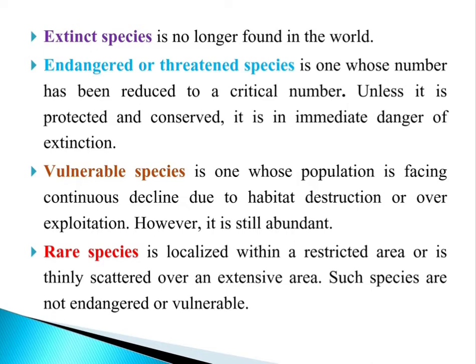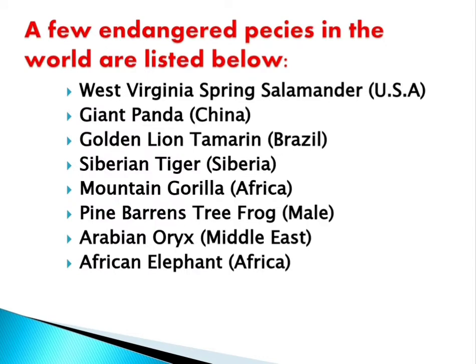Rare species are localized within a restricted area or thinly scattered over an extensive area — their populations are very few and their areas are restricted, but they are not yet endangered or vulnerable. Some globally endangered species include the Virginia spring salamander in the USA, giant panda in China, golden lion tamarin, Siberian tiger, mountain gorilla, pine barren tree frog, Arabian oryx, and the African elephant.